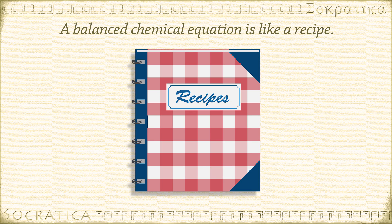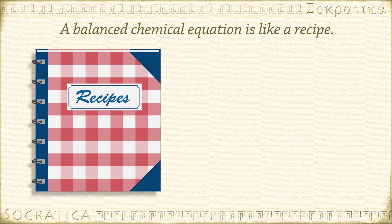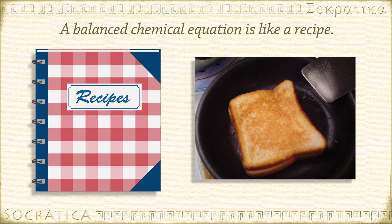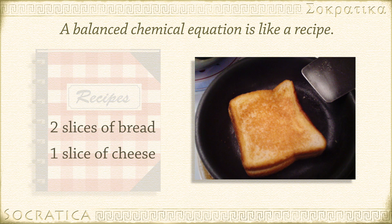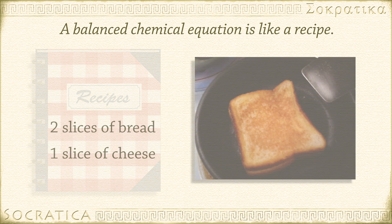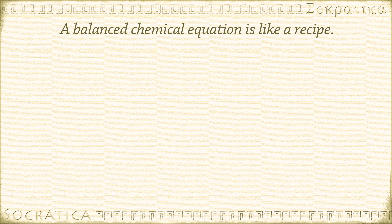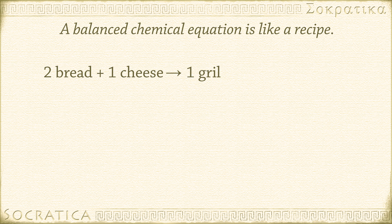The balanced chemical equation tells you how atoms combine in very definite ratios — it's like a recipe. Let's say you want to make grilled cheese sandwiches. You take two slices of bread and one slice of cheese to make one grilled cheese sandwich. Believe it or not, this is just like a balanced chemical equation.